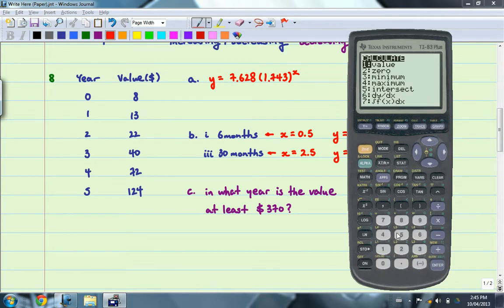So we just need to go ahead and calculate what the intersect is going to be. So that's option number 5. And then you go first curve, second curve, guess. And that will be approximately the 7th year.